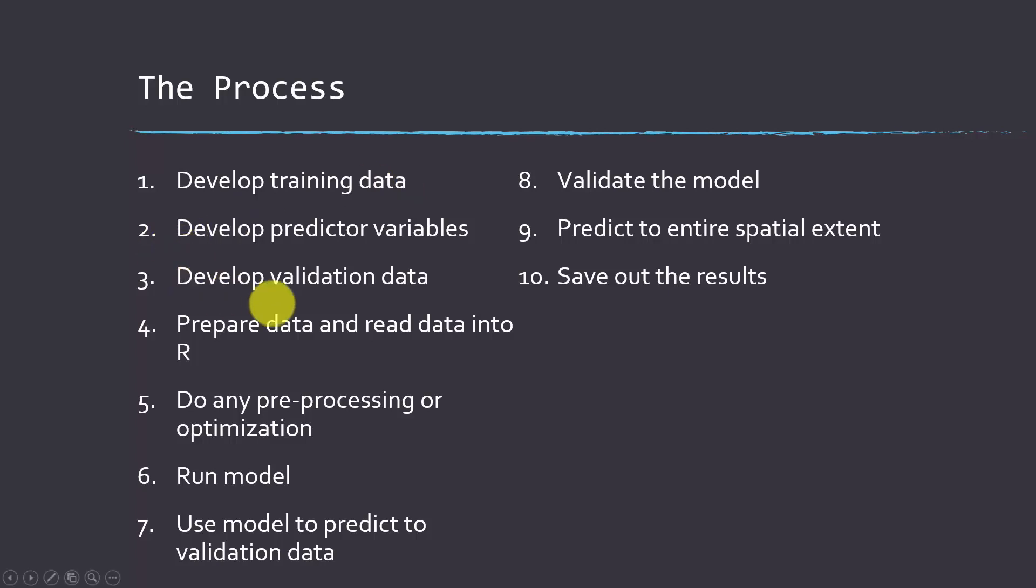You also should have some validation data. So this is data that the algorithm hasn't seen that you can then feed it to see how well it does. You can't really validate on the data that the model was trained on. We'll talk about that later. And then you'll need to prepare the data and bring it into R, so it needs to be in the correct format. You do any preprocessing or optimization that needs to be ran, so optimizing the algorithm, again, prepping the data.